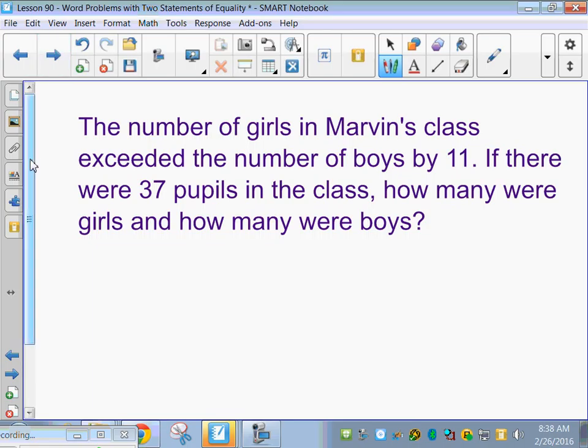So the number of girls in Marvin's class exceeded the number of boys by 11. Riley, who had less? The number of girls exceeded the number of boys. The boys. Exceeded means they had more than. There were more girls than boys, so we have to add to whoever had less. So Jackie, what equation would you write for that first sentence? Good.